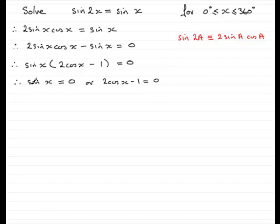So, we've got 2 equations. I've achieved what I want. I've got an equation with 1 trig function in it, sin x equals 0. And then I've got this equation with 1 trig function in it, the cos x. So I should be able to go on and solve them. So, we'll start with this one. When sin x equals 0.